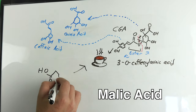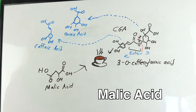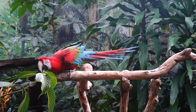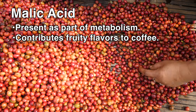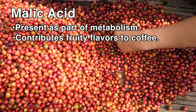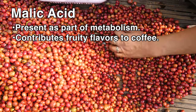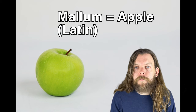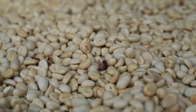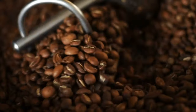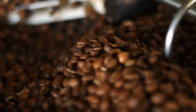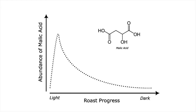Malic acid is prevalent in almost all living things, from the human body to birds to coffee trees. Malic acid is produced and consumed as part of metabolism. It contributes to the fruity flavors perceived in coffee and is often associated with a green apple taste. The name malic comes from the Latin malum, meaning apple. While it is found in green coffee, its prevalence increases during roasting from the decomposition of more complex compounds. This occurs to a maximum point around a light roast, after which the amount of malic acid present decreases as the roast progresses.